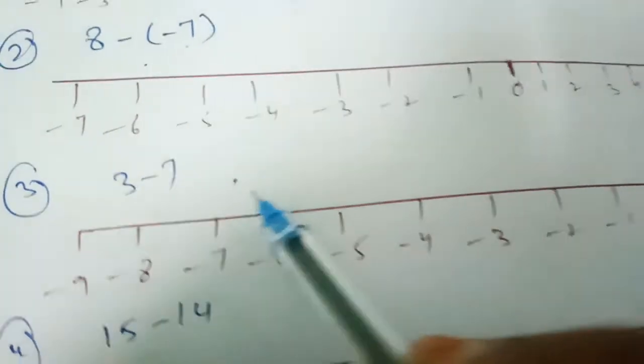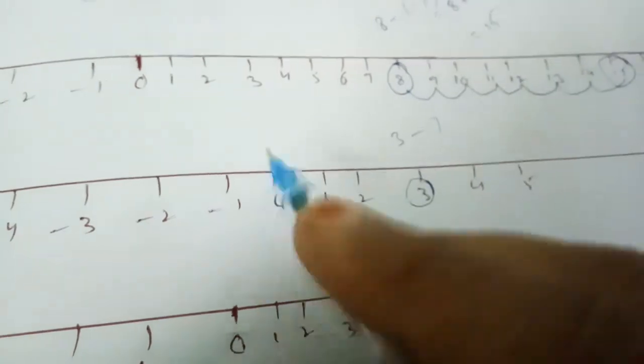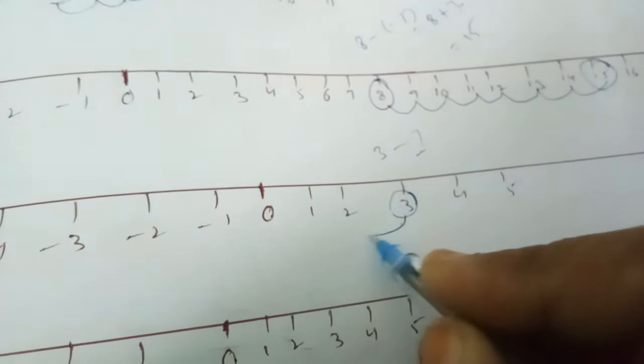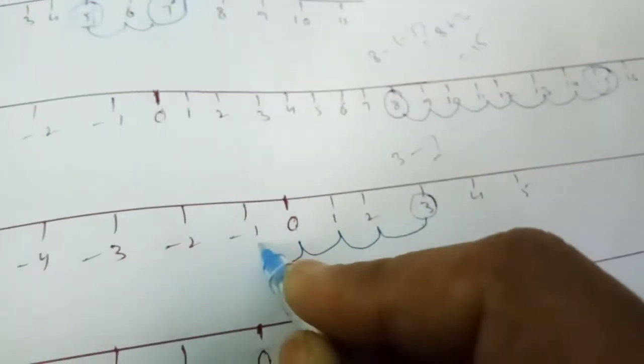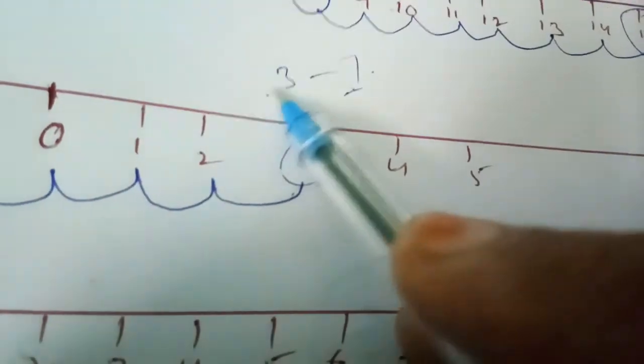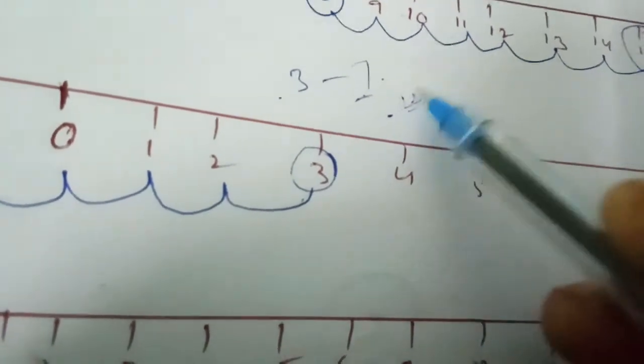Now next one: 3 minus 7. Where is positive 3? It's on the right side. Whenever we subtract, we move to the left. So we move 7 times: 1, 2, 3, 4, 5, 6, 7. In direct form, 7 minus 3 equals 4, and the bigger value has a minus sign. So the answer is minus 4.